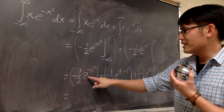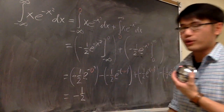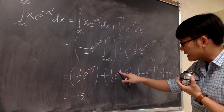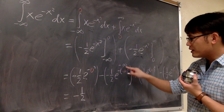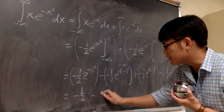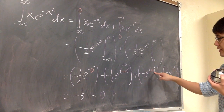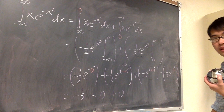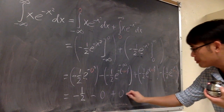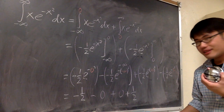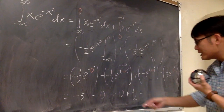Let's simplify. E to the zero is one, and negative zero is zero, so the first term gives negative one-half. For the term with negative infinity: negative infinity squared is positive infinity, so e to the negative infinity equals zero — that whole term is zero. For the infinity squared term in the second part: e to the negative infinity is again zero, so that term is zero. The last term is e to the zero, which is one, multiplied by negative one-half; but since we're subtracting it, it becomes plus one-half. So the total is negative one-half plus positive one-half, which equals zero.